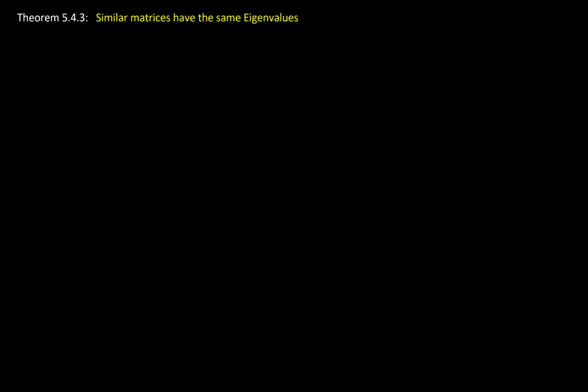Hello everyone, welcome back. In this video we're going to be looking at 05.43 if you're following the Watkins book. We're going to be looking at similar matrices and we're going to show that if two matrices are similar then they have the same eigenvalues. This is going to be a direct proof, so we're going to assume that the matrices are similar and then arrive at the conclusion that they have the same eigenvalues.